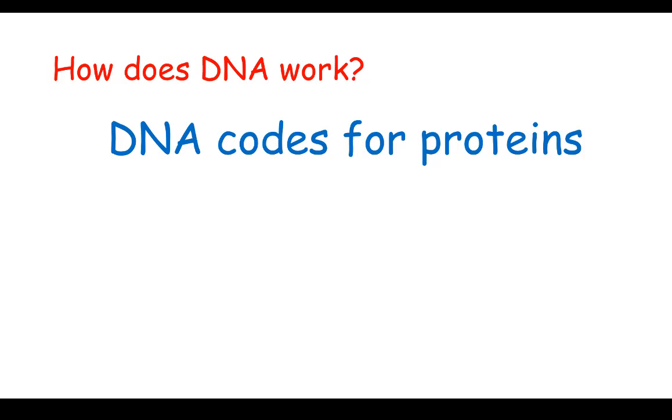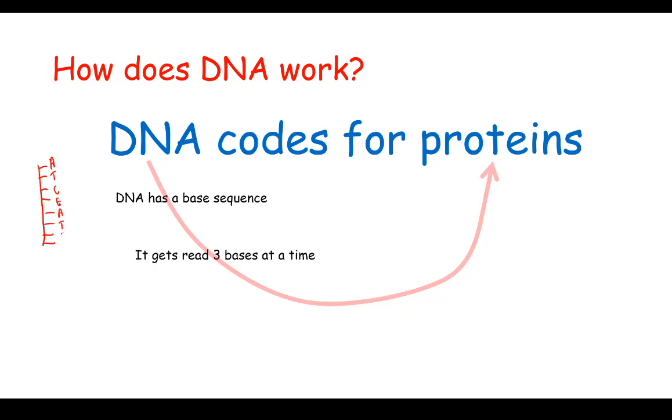So how does DNA work? Well, DNA codes for proteins, but it's not as direct as that, it's a little bit more indirect. We know that DNA has a base sequence. So if we took one strand of DNA and drew it out here: A, T, C, G, A, T, T, A. That would be its base sequence, which is just the order of bases along one strand.